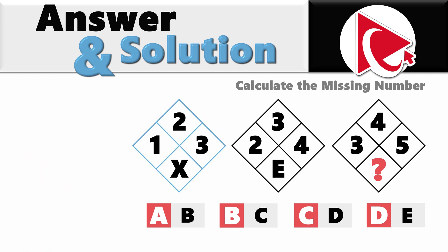In the first diamond we have numbers 1, 2 and 3. The sum of 1, 2 and 3 is 6, which is verbally spelled as S-I-X. And the last letter of the word 6 is X. This is how X was calculated.